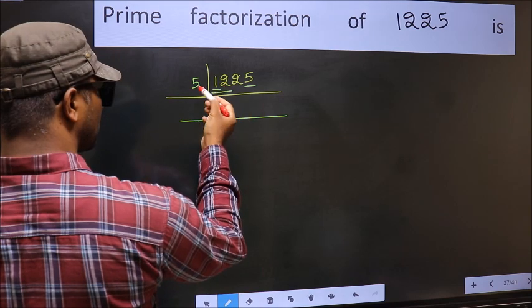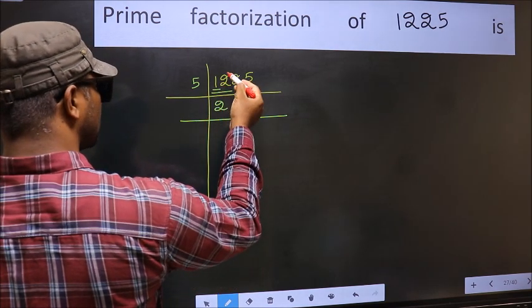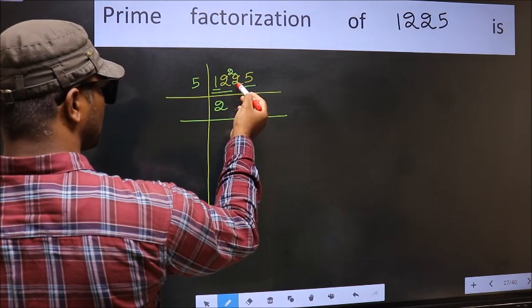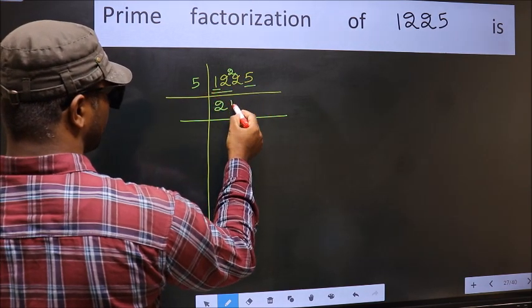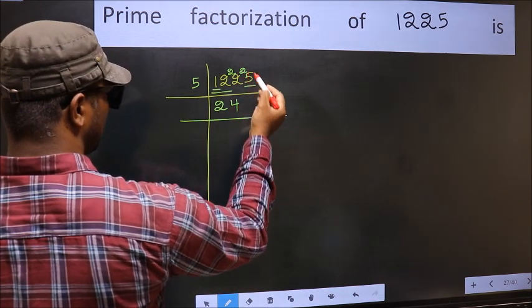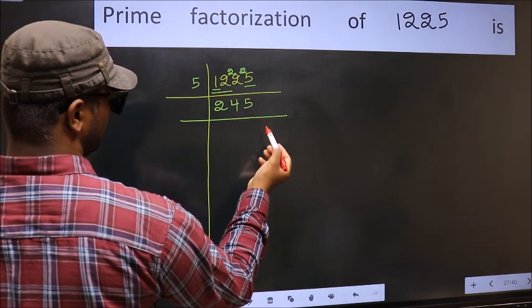12 minus 10, 22 carried forward. A number close to 22 in the 5 table is 5 times 4, 20. 22 minus 20, 2 carried forward, 25. When do we get 25 in the 5 table? 5 times 5 is 25.